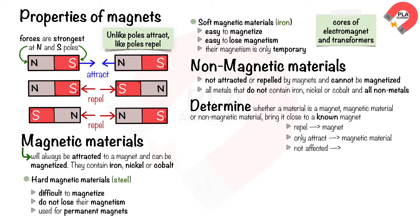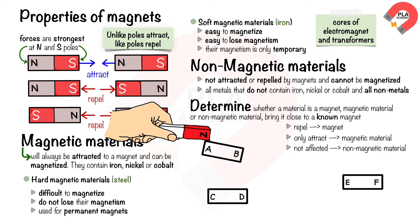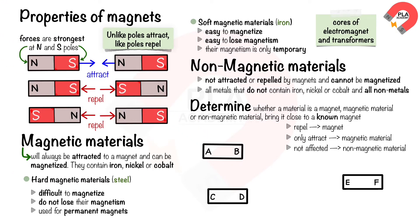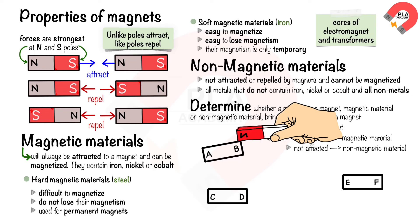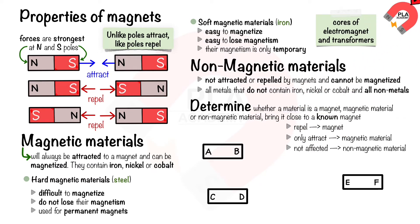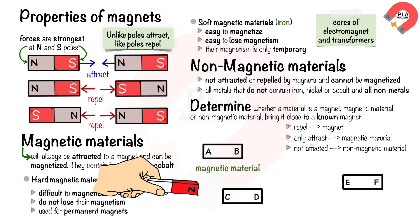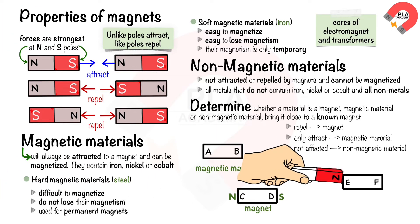If it is not affected, then it is a non-magnetic material. For example, there are three unknown metal bars and a known magnet. When a north pole is brought near end A, they attract each other; then the north pole of the known magnet is brought near end B, and they attract each other again — this shows that bar AB is a magnetic material. When a north pole is brought near end C, they repel each other — this shows that bar CD is a magnet and end C is the north pole, so end D is the south pole. When a north pole is brought near end E and nothing happens, this shows that bar EF is a non-magnetic material.